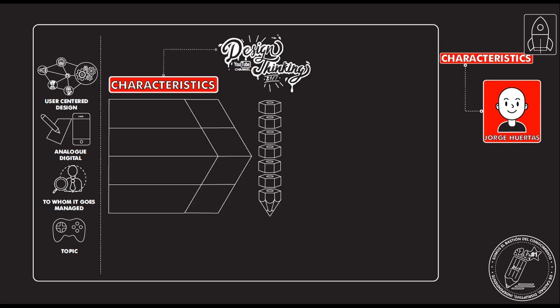After that you start defining the characteristics. The first one is the objective — what is the objective of this development? Am I making a presentation? Am I making a poster? Whatever I'm doing, I decide what it is going to be. Then I decide the format and of course the channel. Is it going to be analog? Is it going to be digital? How is it going to work?